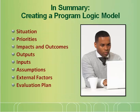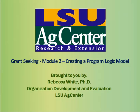Let's summarize what we've covered. In Module 2, we addressed creating a program logic model. The first task was to write about the situation and priorities of your issue. Next, you developed the impacts and outcomes sections. Then you developed planned program outputs in terms of project participation and project activities. Then you developed your input section of what you will need in the way of program resources. You also noted any assumptions as well as any external factors that exist. Finally, you designed your program evaluation. Thank you for reviewing this presentation. I hope you will set a personal goal to get started in developing a logic model for your grant idea. Our next module, Module 3, addresses identifying potential funders for grant projects.